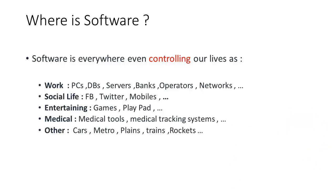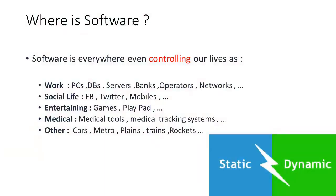In other words, software is anywhere. Software is generally an application that either just gives you information — like a static site that doesn't wait for your interaction, just showing text and pages — or it can be dynamic, like Amazon, where you can search for a specific item, add it to a shopping basket, add your details and credit card details, and buy that item.